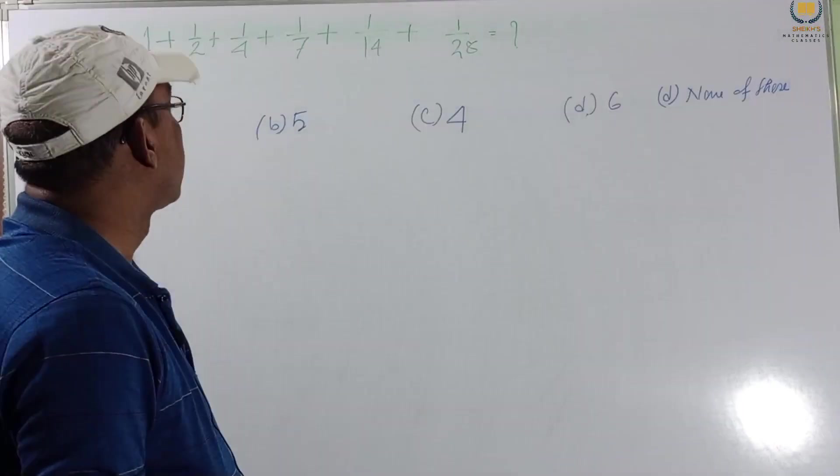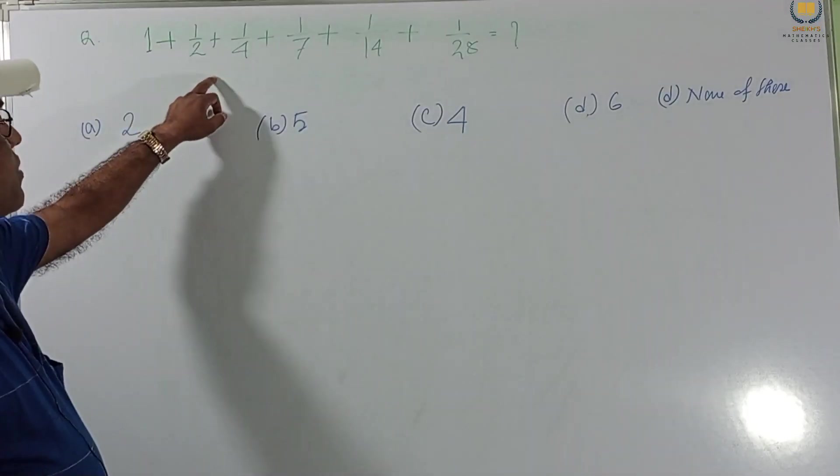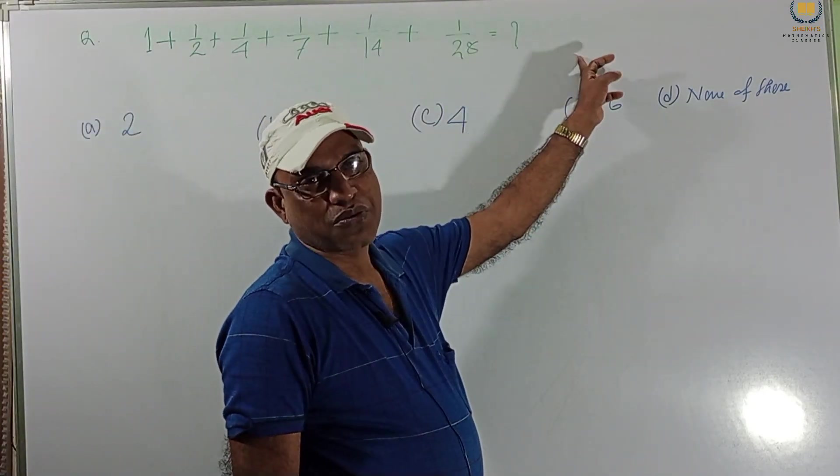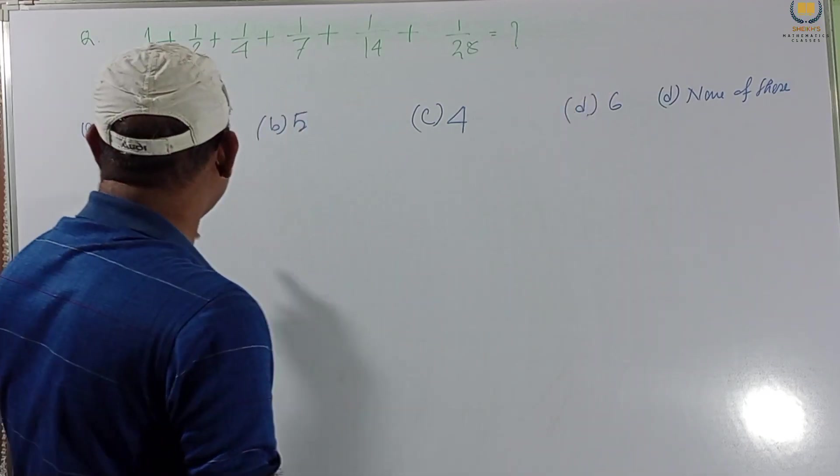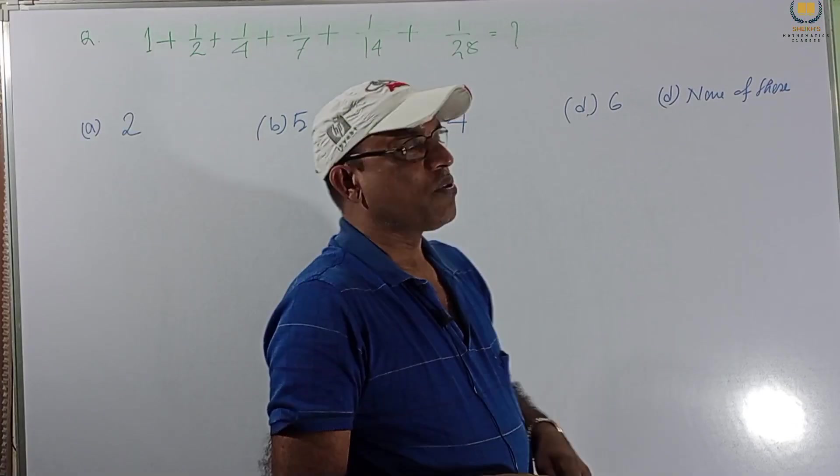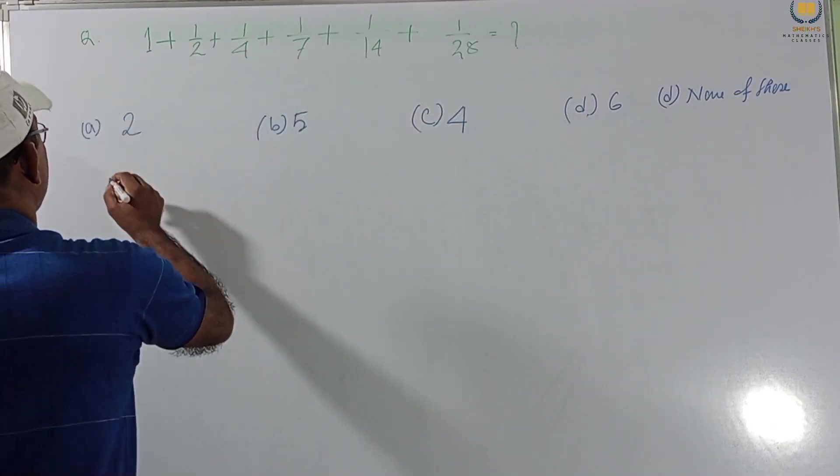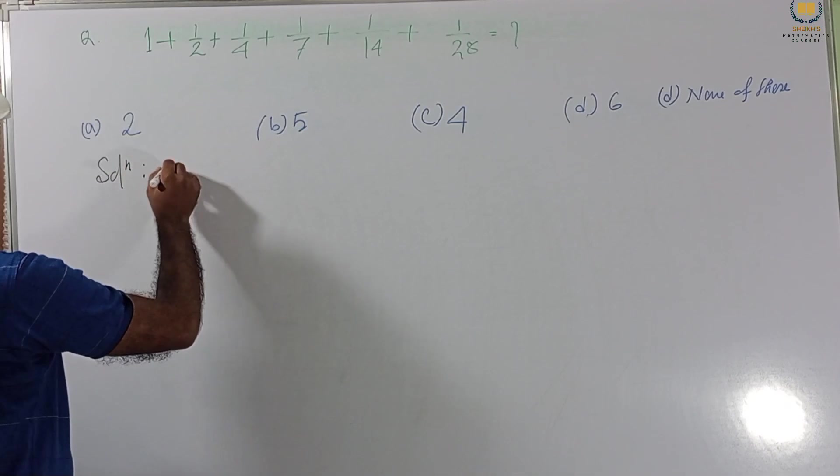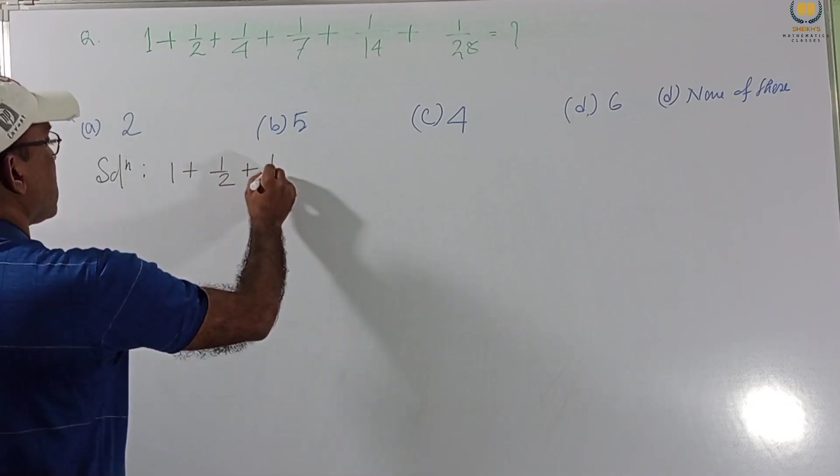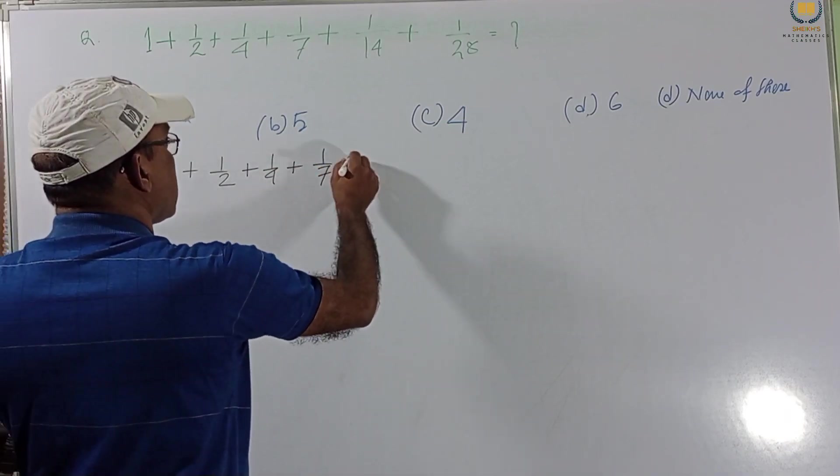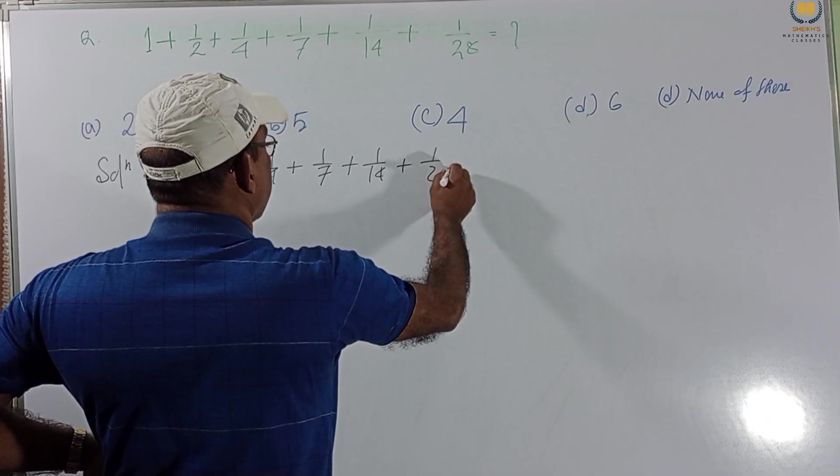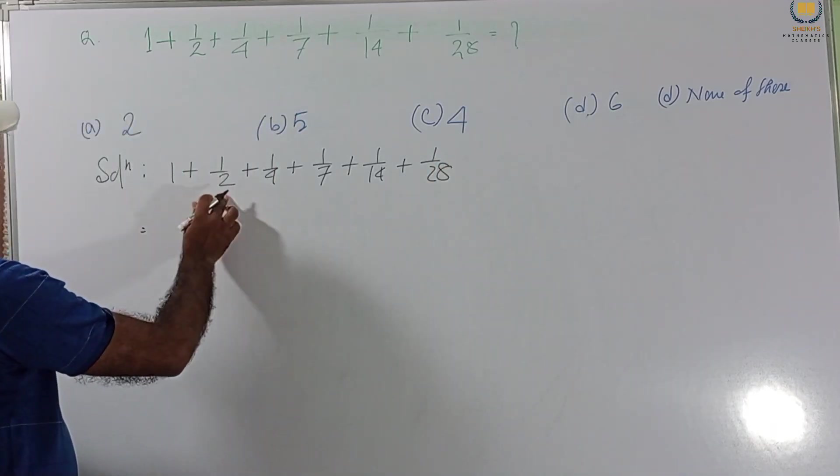Another problem. The problem given 1 plus 1 by 2 plus 1 by 4 plus 1 by 7 plus 1 by 14 plus 1 by 28 equal to what? The option given 2, 5, 4, 6, none of this. Which one? Our correct option we have to find. And this is 1. I'm rewriting this line. 1 plus 1 by 2 plus 1 by 4 plus 1 by 7 plus 1 by 14 plus 1 by 28.